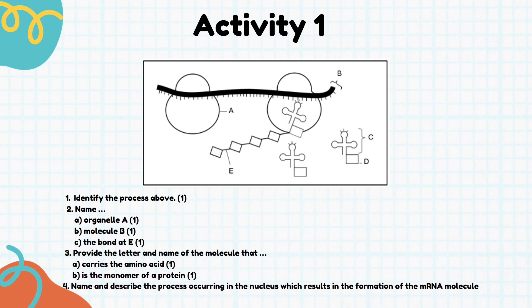Activity one: we need to identify the process shown above. The answer is translation. How do you know it is translation? Because of the presence of tRNA. As a student I would look for the cross-like shapes — if you see those crosses you know it is translation.